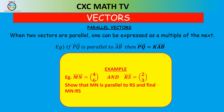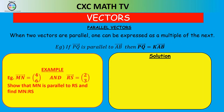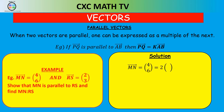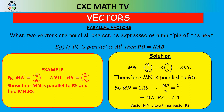Example: show that vector MN is parallel to vector RS and find the ratio of MN to RS. Vector MN is (4, 6) and vector RS is (2, 3). We can factor out 2 from MN: MN = 2 × (2, 3) = 2 × RS. Therefore MN is parallel to RS since MN = 2RS, and the ratio MN to RS is 2 to 1.